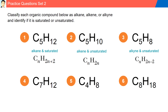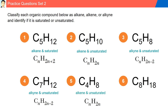Question four, C7H12: 12 is less than double the number of carbon atoms — it is less than 14 — therefore it satisfies an alkyne formula, and it is unsaturated. Question five, C4H8: the number of hydrogen is double the number of carbons, so it satisfies the alkene general formula, and it is unsaturated. Question six, C8H18: the number of hydrogen is more than twice the number of carbons, so it is an alkane, and it is saturated.